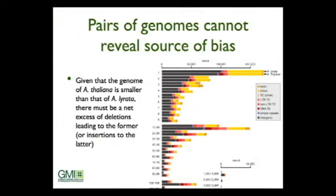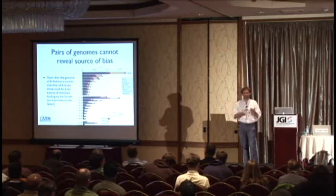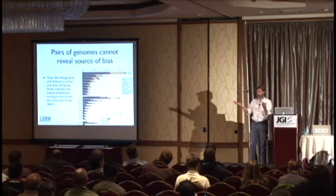Just comparing pairs of genomes cannot reveal the source of the bias. You can make arguments — for instance, if it were a mutation mechanism causing this, why would you only see a bias once you get deletions longer than about 10 base pairs, with the bias growing stronger the longer they are? That could suggest a repair mechanism, or alternatively, selection is favoring losing larger chunks. It could be either.